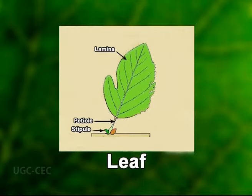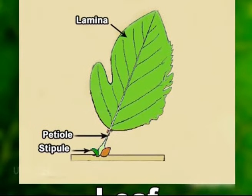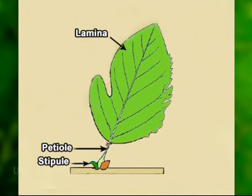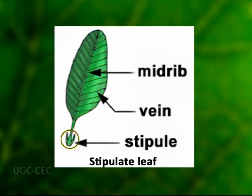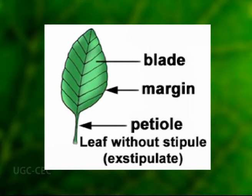Structurally, a complete leaf of an angiosperm consists of a petiole (that is, leaf stalk), a lamina (that is, leaf blade) and stipules. Stipules are small structures located to either side of the base of the petiole. Not every species produces leaves with all of these structural components. In certain species, paired stipules are not obvious or are absent altogether.